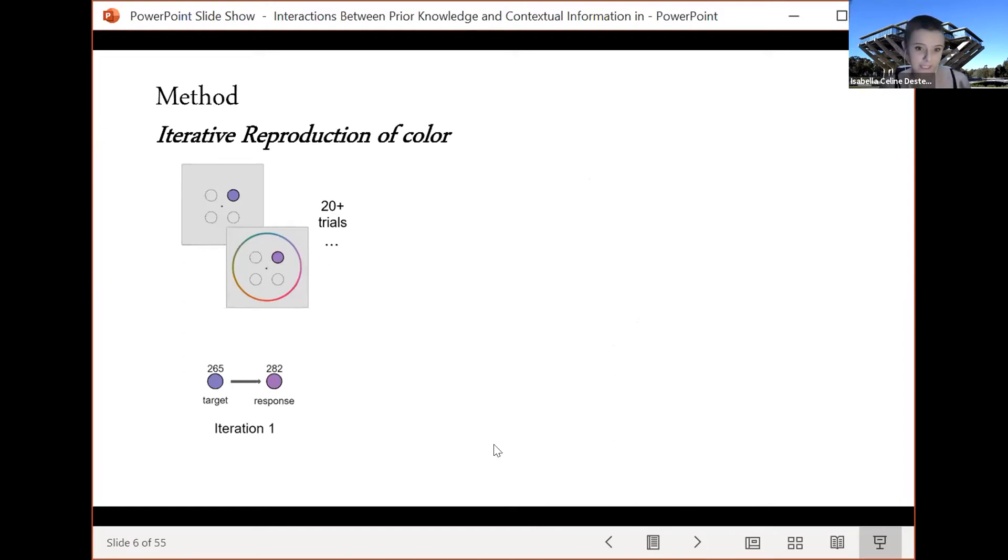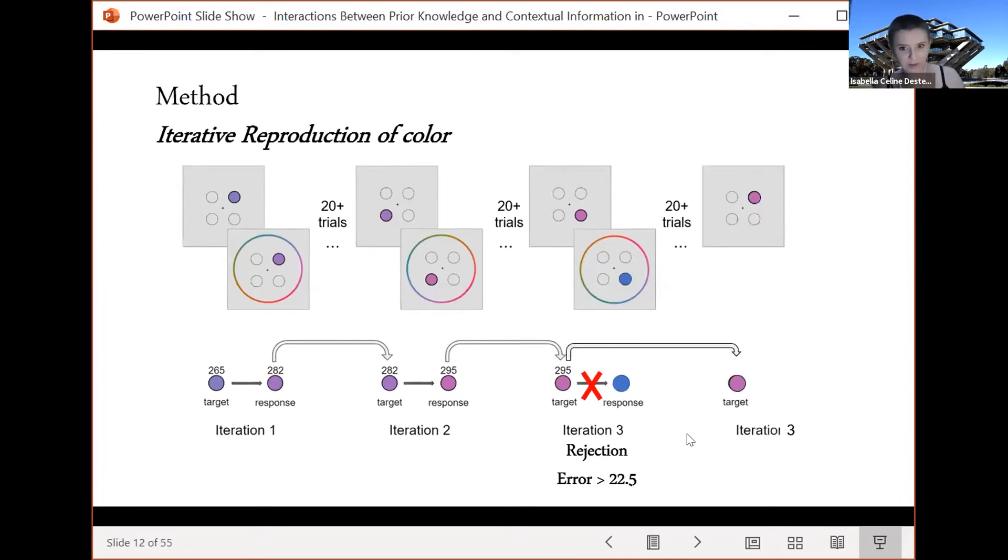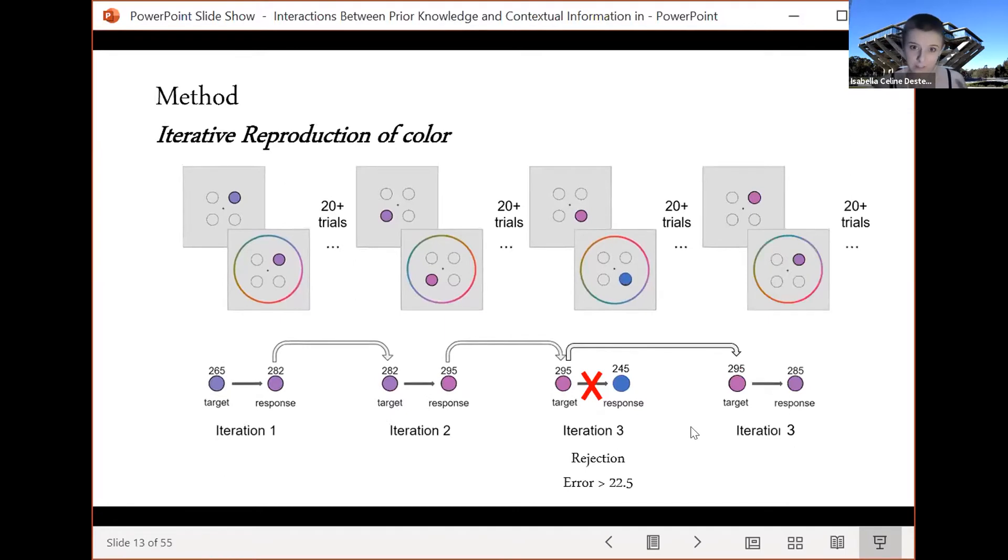On the first iteration a subject sees a target color and produces a response. Then many trials pass in between to wipe that trial from visual working memory and then that response is used as the target of the next iteration and then the subject responds and this process continues until we collect an iterated chain of 15 iterations. But if the subject's response is very different from the color that they saw we will reject that response to impose a continuity correction and the trial will be repeated so the length of the experiment actually varied for different subjects.